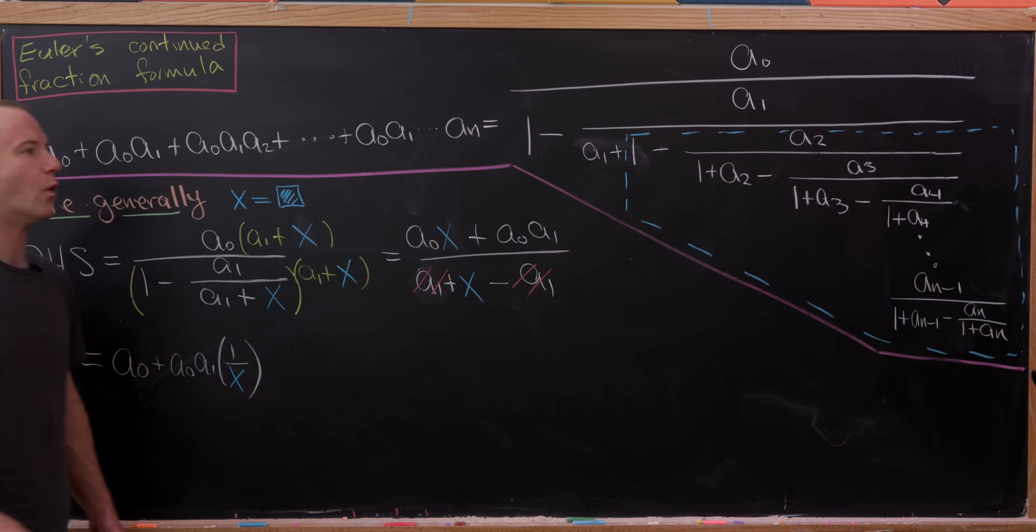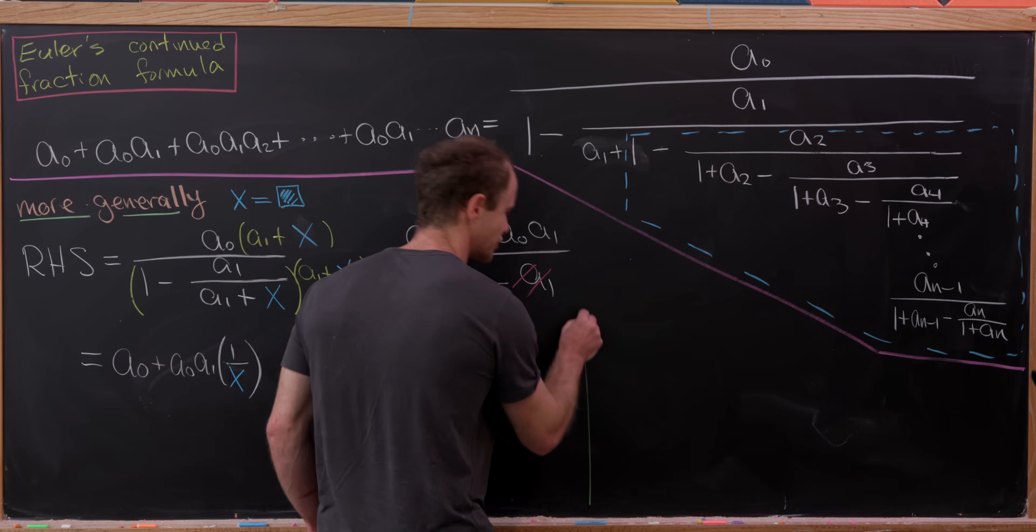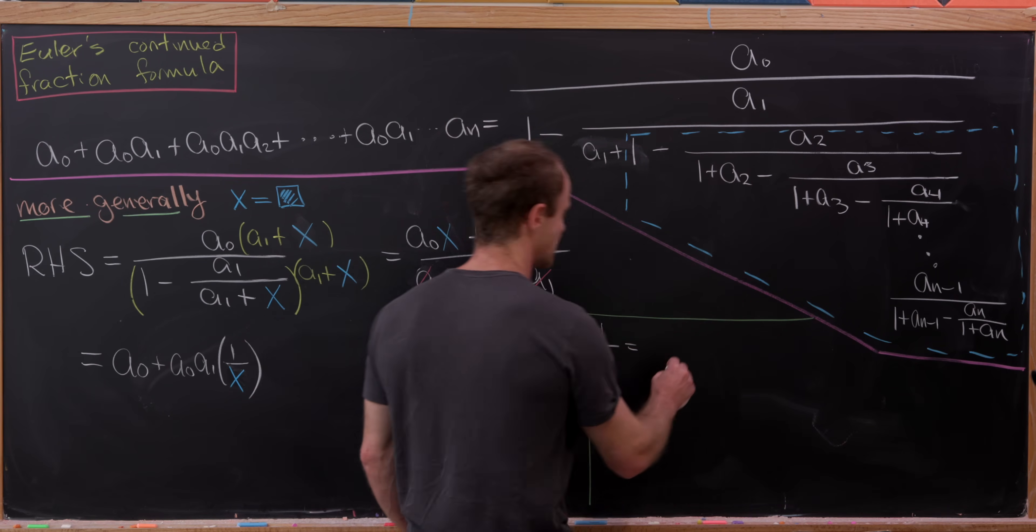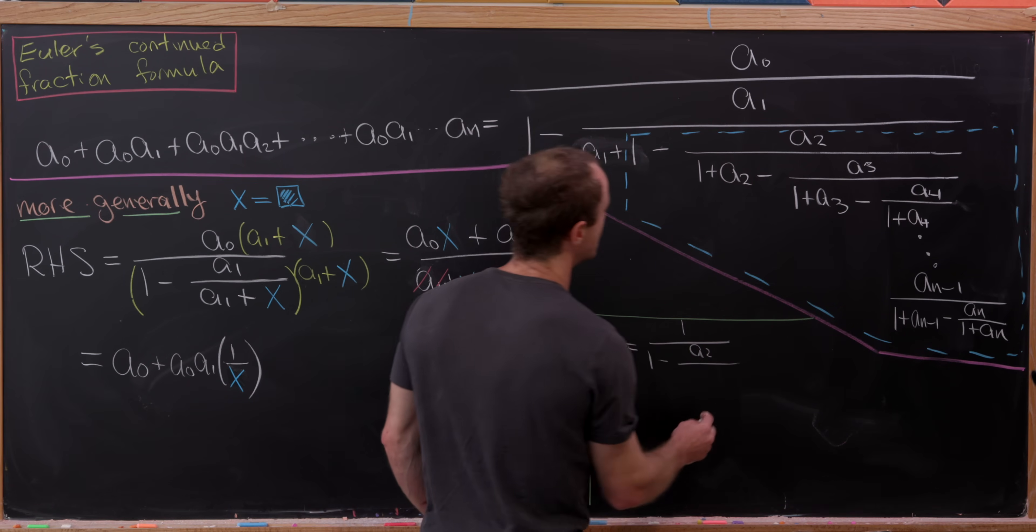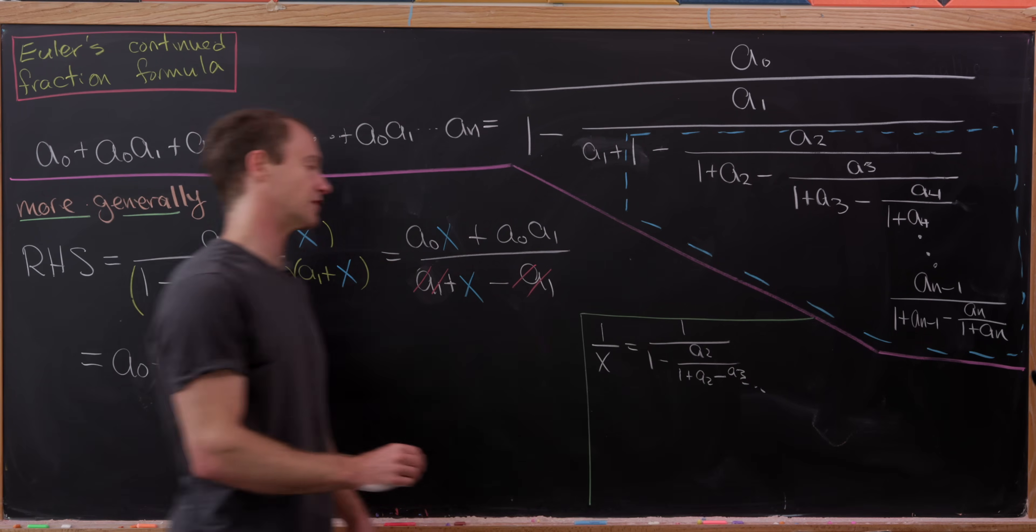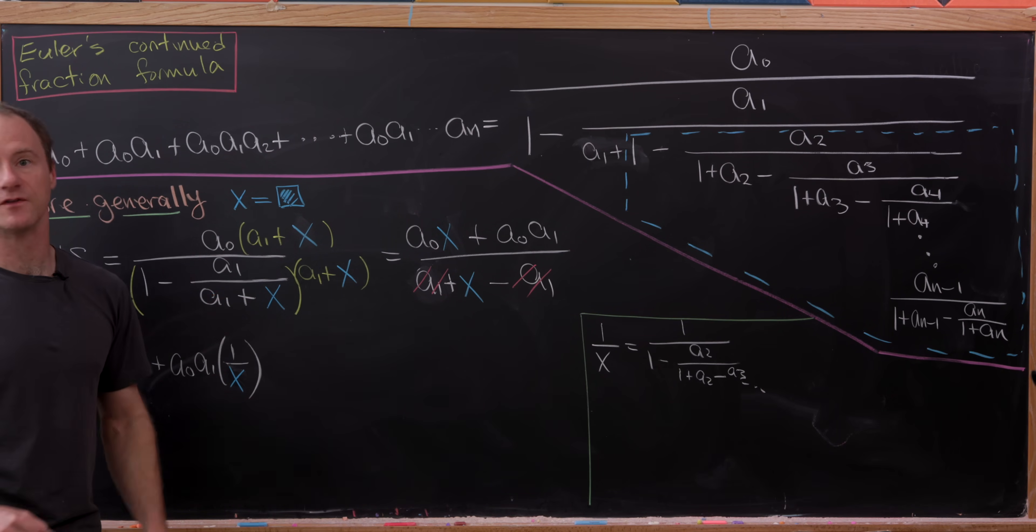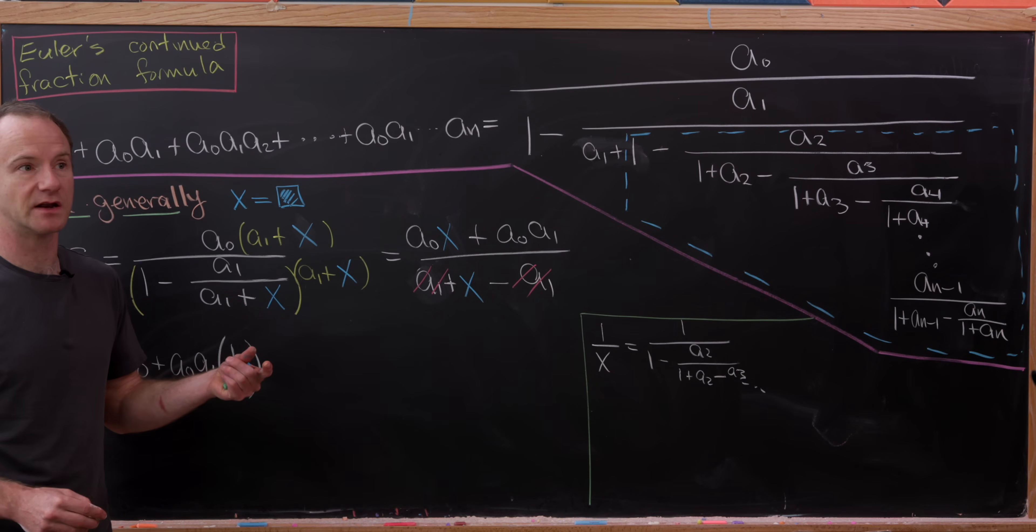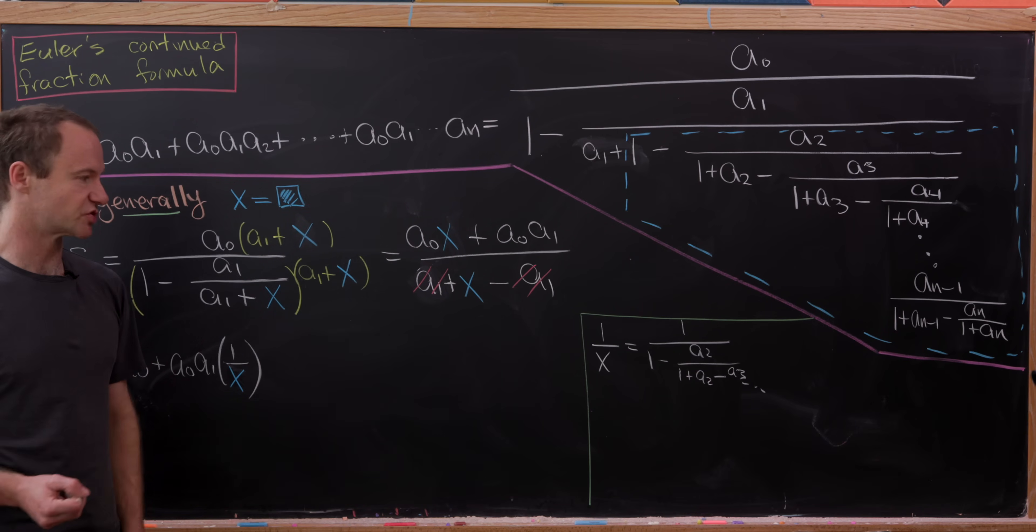And now let's see if we can figure out what one over x is. But I think we can figure out that pretty easily by just writing out what one over x is over here. So let's see one over x will be 1 over 1 minus a2 over 1 plus a2 minus a3, and then so on and so forth. But that's exactly a smaller version of the formula we're trying to prove. So if we had made a careful induction hypothesis, this is where we would apply it. We would have assumed that this sort of formula holds for smaller versions of this formula.